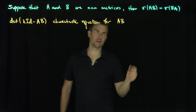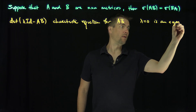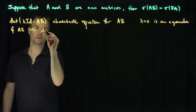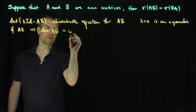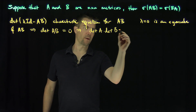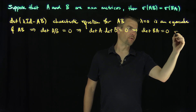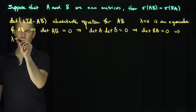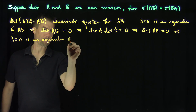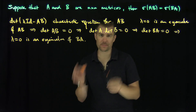So if lambda equals zero is an eigenvalue of AB, that implies that the determinant of AB is equal to zero. But that implies that the determinant of A times the determinant of B is equal to zero, by properties of determinants. By commutativity, the determinant of BA is also equal to zero, which says that lambda equals zero is an eigenvalue of BA. So that takes care of the case: if zero is an eigenvalue of one, it has to be an eigenvalue of the other.